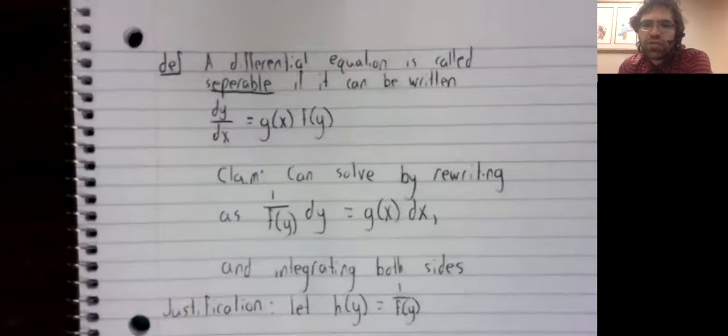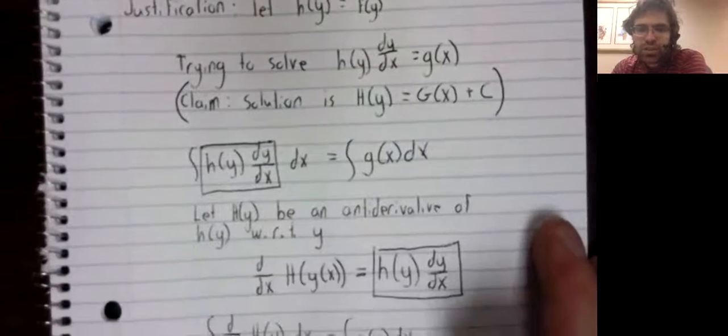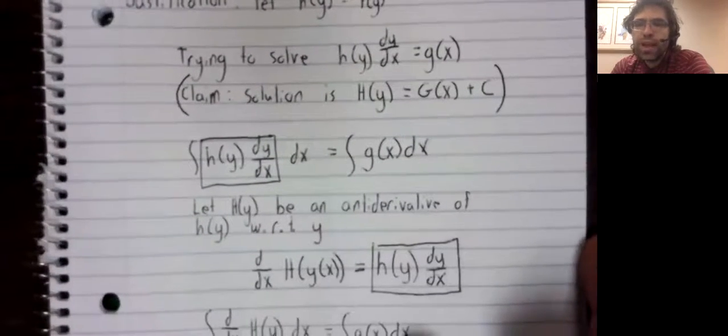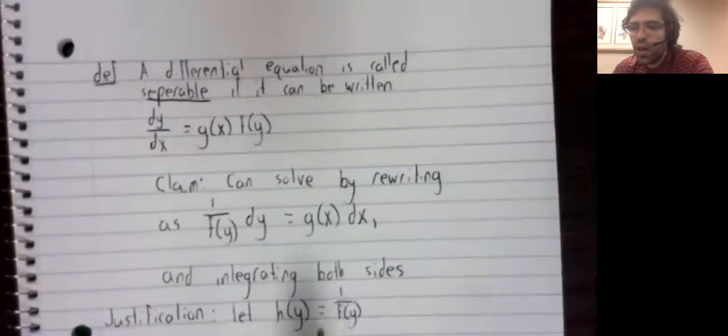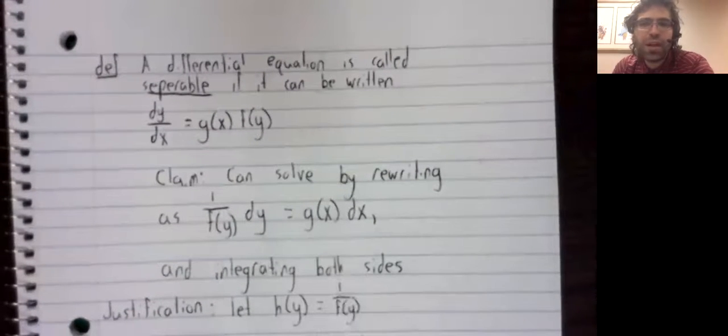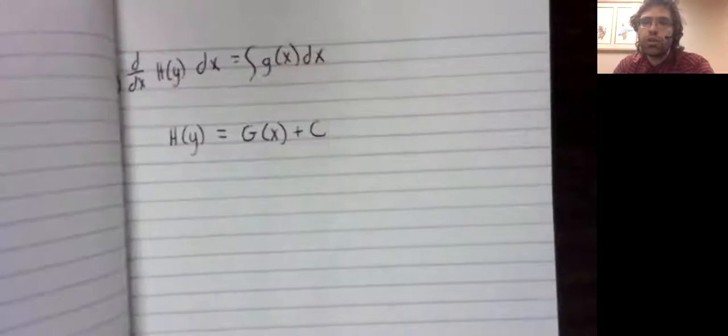All of our steps here were valid. We didn't do anything dubious like we do up here when we multiply both sides by dx. It's all formal and correct.